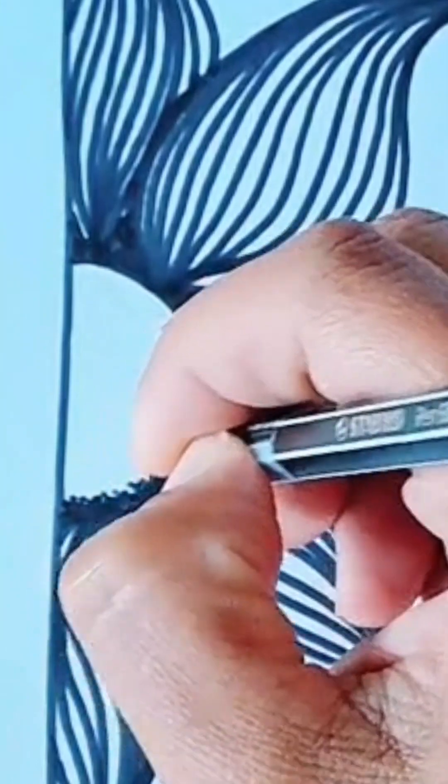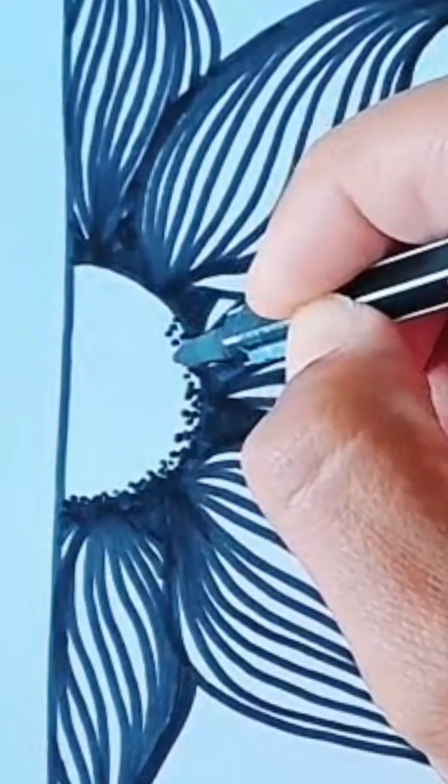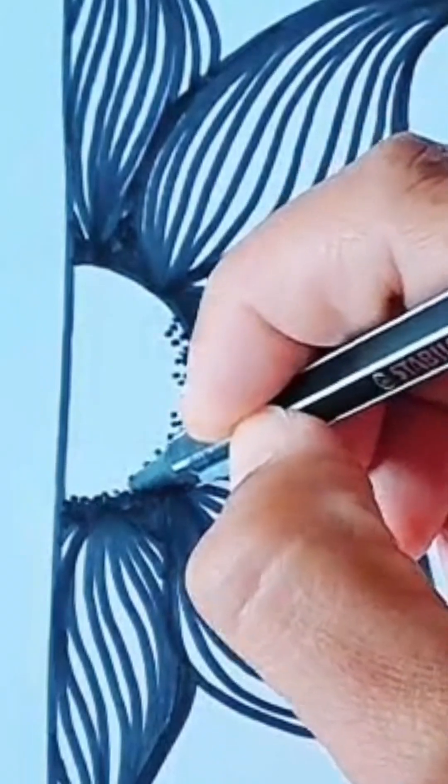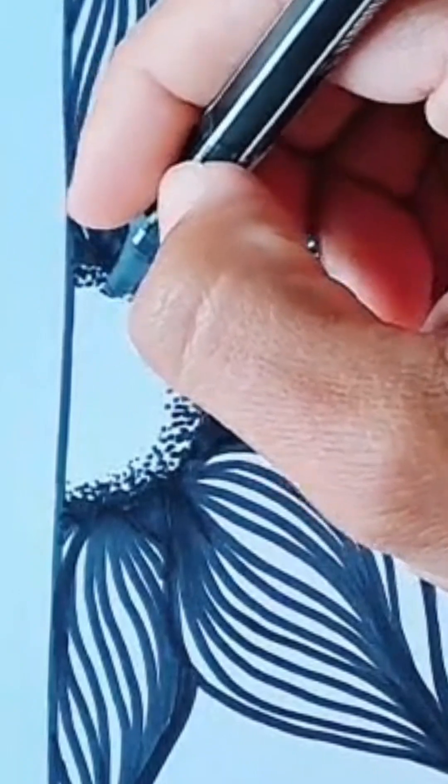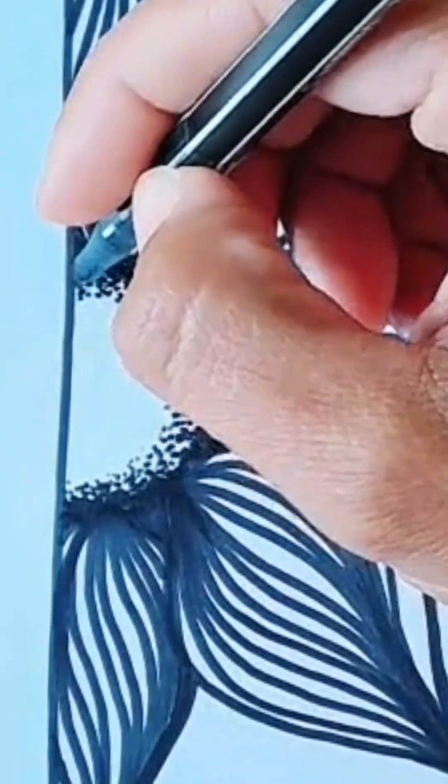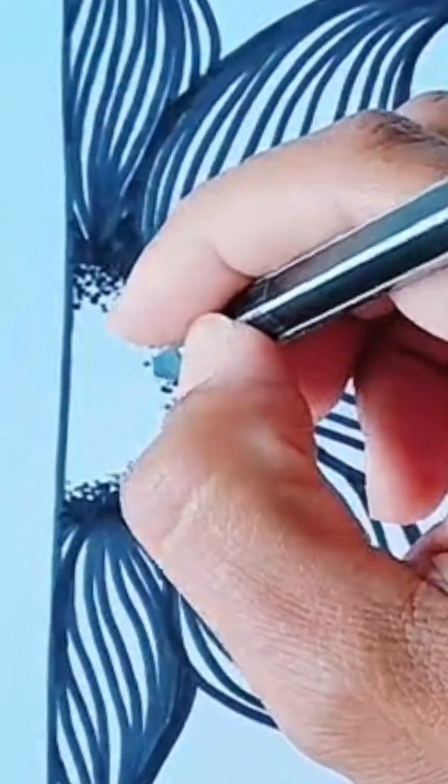Inside the center semicircle I'm just going to add some dots, some stippling just to create a little bit of a varied texture. What I'm doing is I'm keeping the dots quite dense around the edges, and as I'm going towards the center I'm spreading the dots apart.